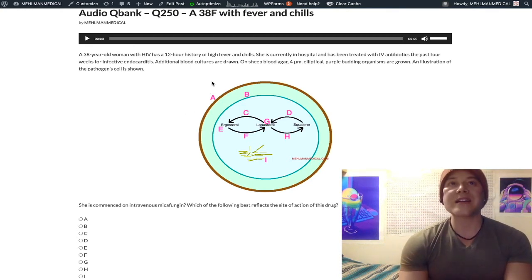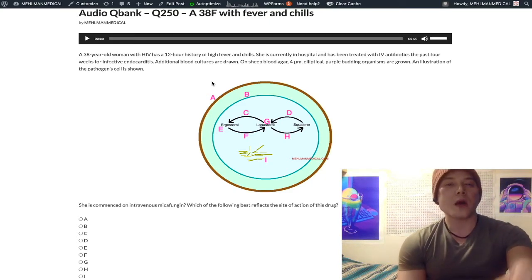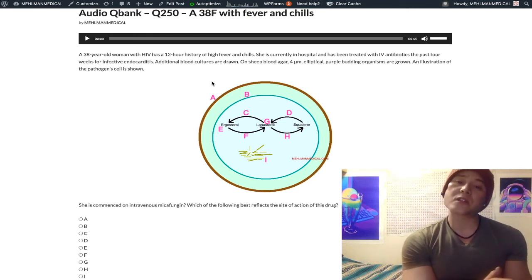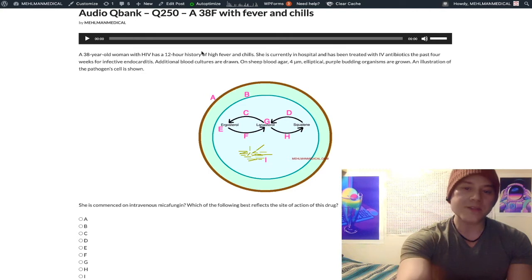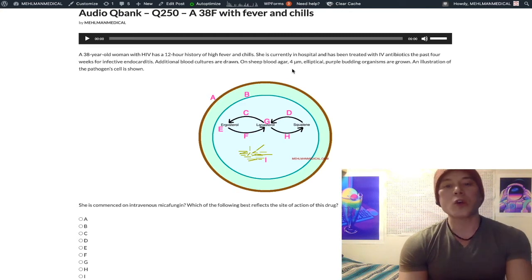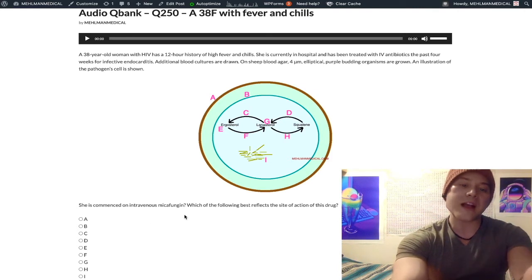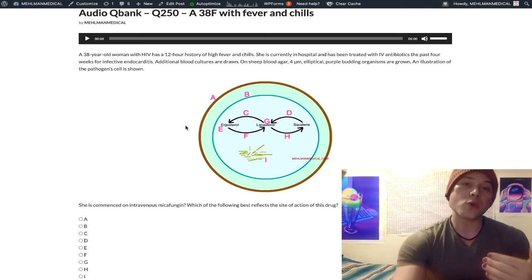Caspofungin and micafungin are classically used for invasive aspergillosis and invasive candidemia. Now, I just said a moment ago that for severe fungal infections, we classically use amphotericin B, which is true. So if this question's not asking about mycophungin, like if we only have this top paragraph here, nothing else, and you were to say, Michael, what drug could we probably use?